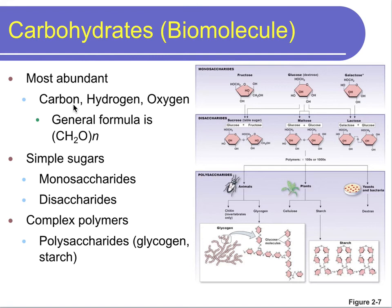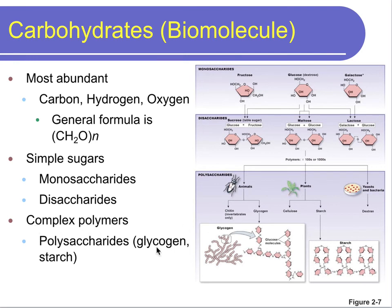Carbohydrates are the most abundant biomolecule and are made up of CHO — carbon, hydrogen, and oxygen — with the general formula CH₂O. For glucose, n equals six: six carbons, twelve hydrogens, and six oxygens. Carbohydrates have a typical ring structure. Simple carbohydrates are monosaccharides — mono meaning one — such as fructose, glucose, and galactose. Disaccharides have two units: sucrose is glucose plus fructose, maltose is two glucoses, and lactose is glucose plus galactose. Complex polymers are polysaccharides — poly for many. Glycogen is a great example, which is a bunch of glucose stored together in the body.